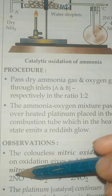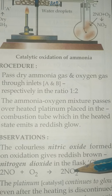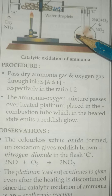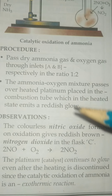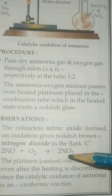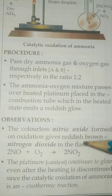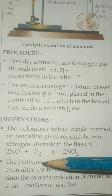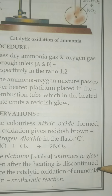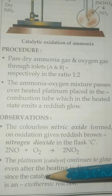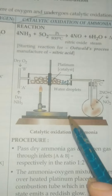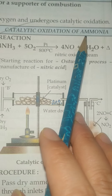When nitric oxide reacts with oxygen, it forms nitrogen dioxide. The platinum continues to glow even after the heating is discontinued. Even after stopping the heating, the platinum will continue to glow because of the catalytic oxidation of ammonia, indicating that the reaction is an exothermic reaction.